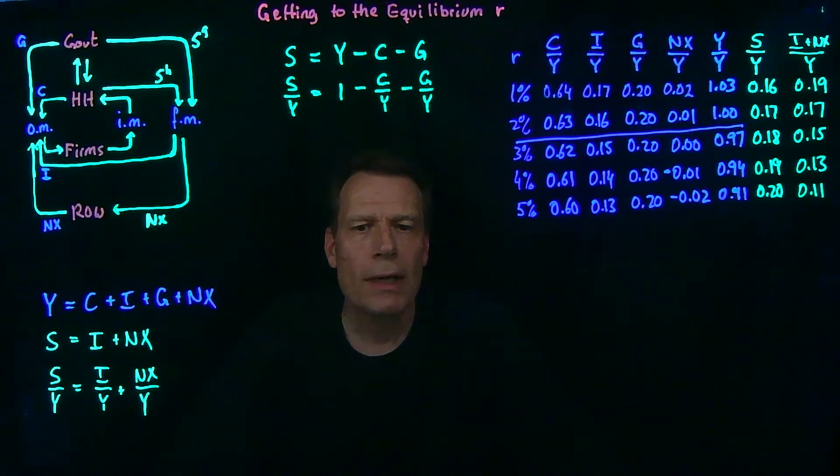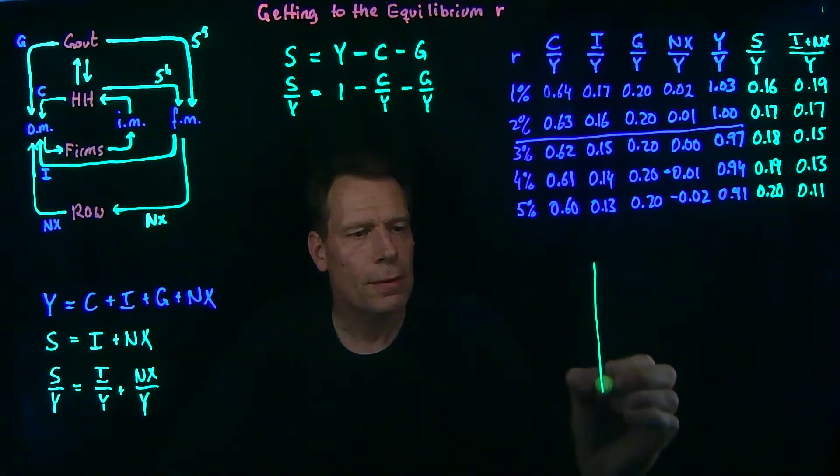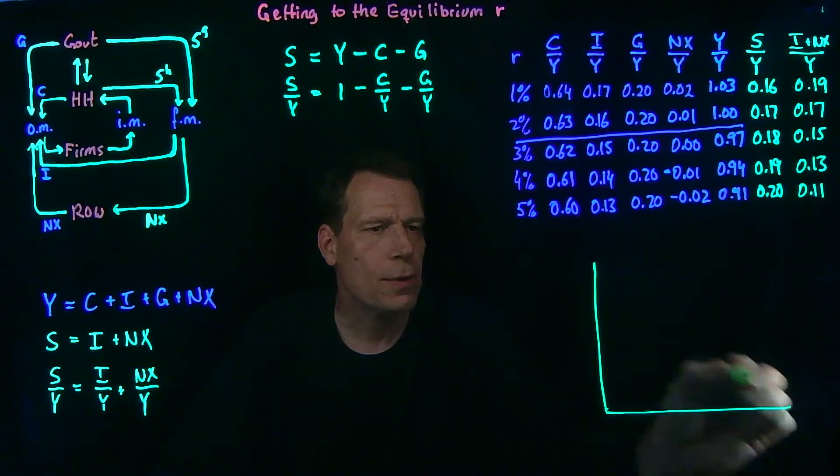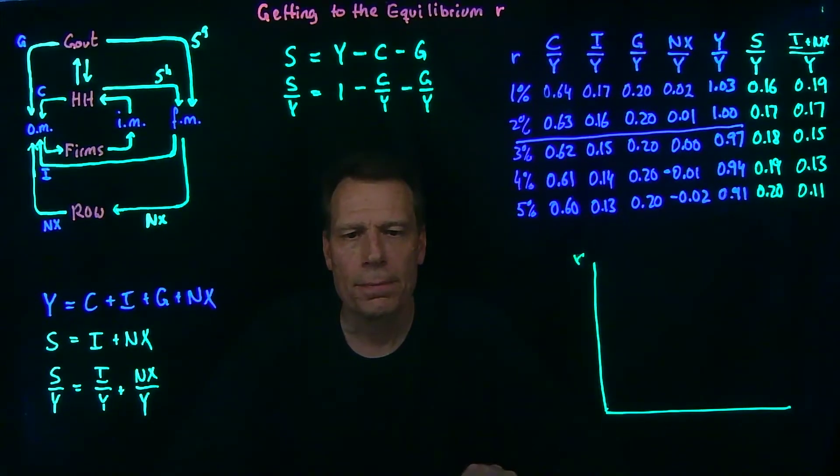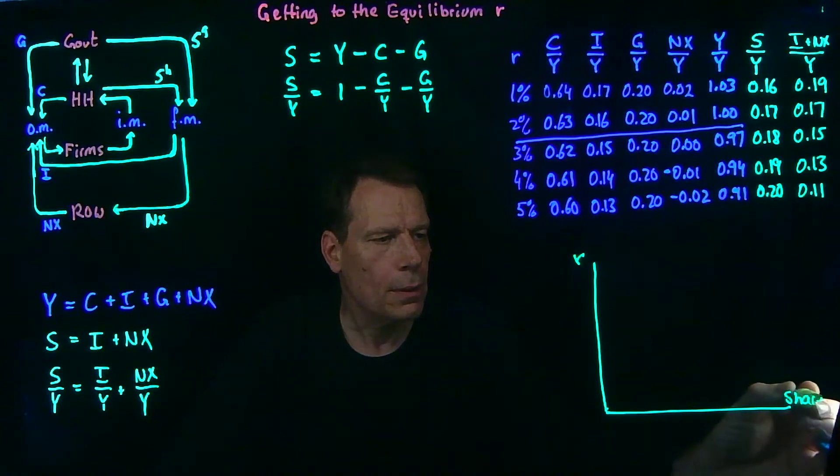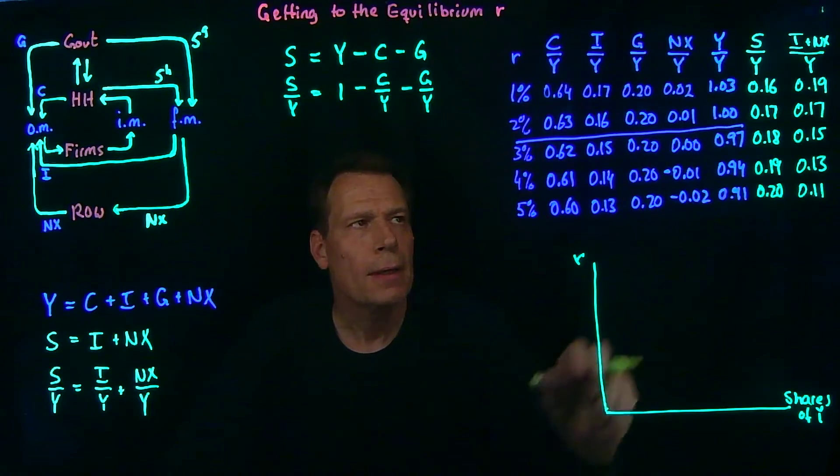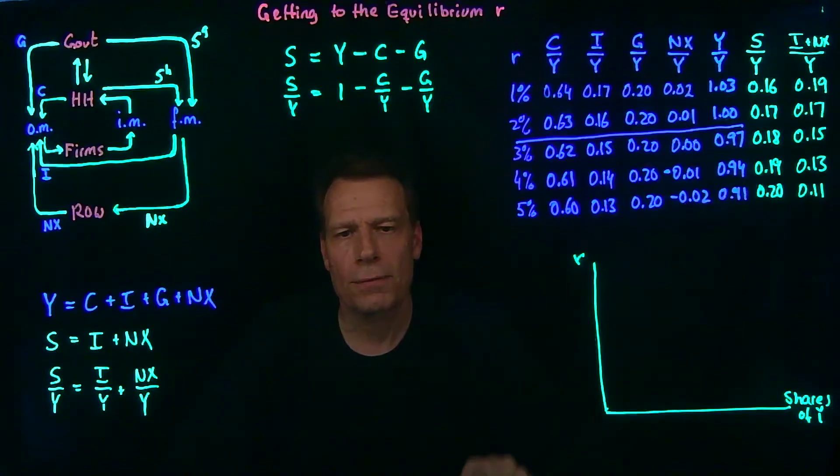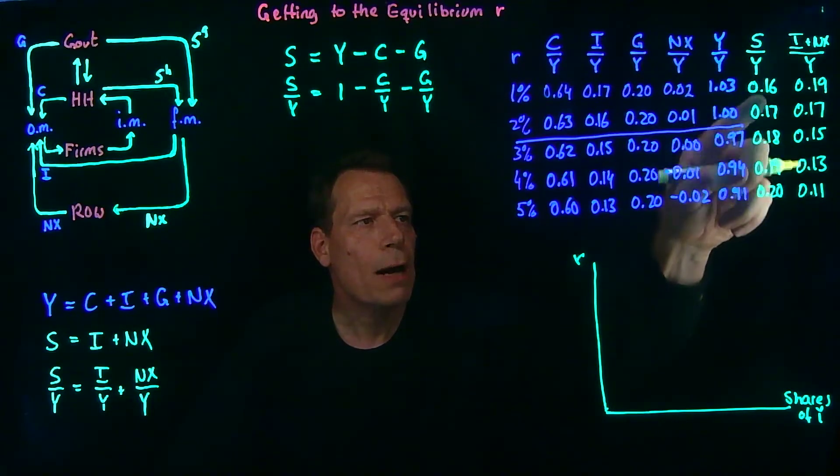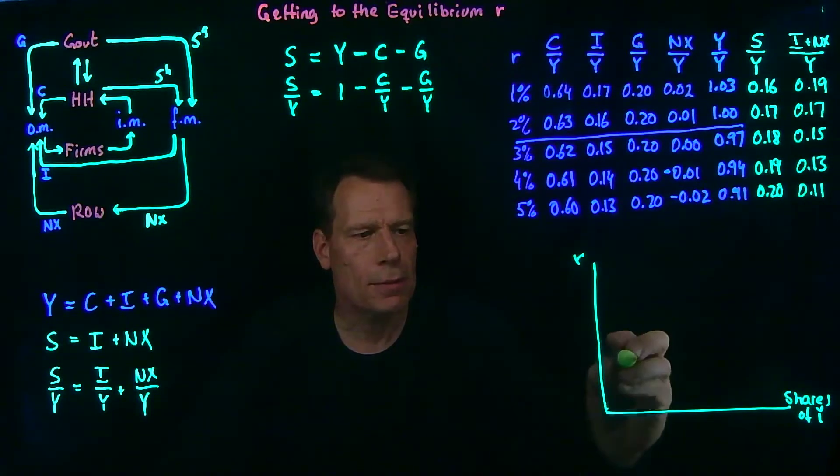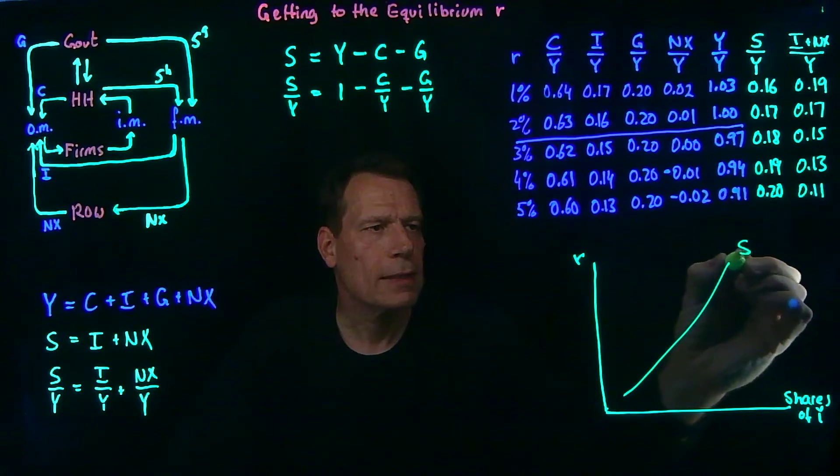But more importantly, we can now draw a graph that illustrates how that equilibrium real interest rate emerges. In that graph, we're going to put the real interest rate on the vertical axis and shares of GDP on the horizontal axis. We then have two curves represented by these two columns. The savings share of GDP, which goes up as the real interest rate increases. So it's a curve like this.